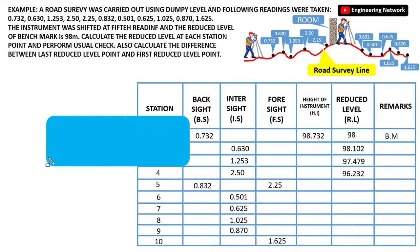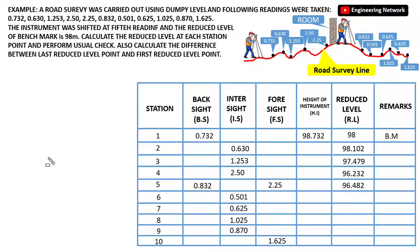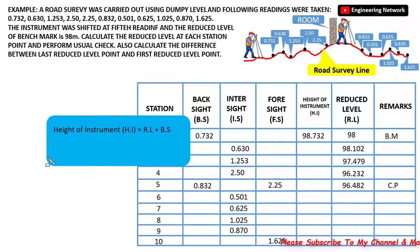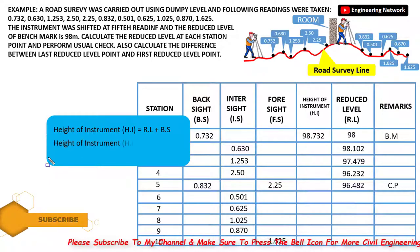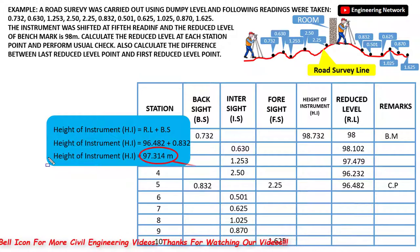At point 5 the instrument is shifted, so the reduced level equals height of instrument minus fore sight: 98.732 minus 2.25 equals 96.482 meters. Since the instrument is shifted at the fifth reading, I will write CP which stands for change point. At point 5 I also calculate the new height of instrument: 96.482 plus back sight 0.832 equals 97.314 meters.